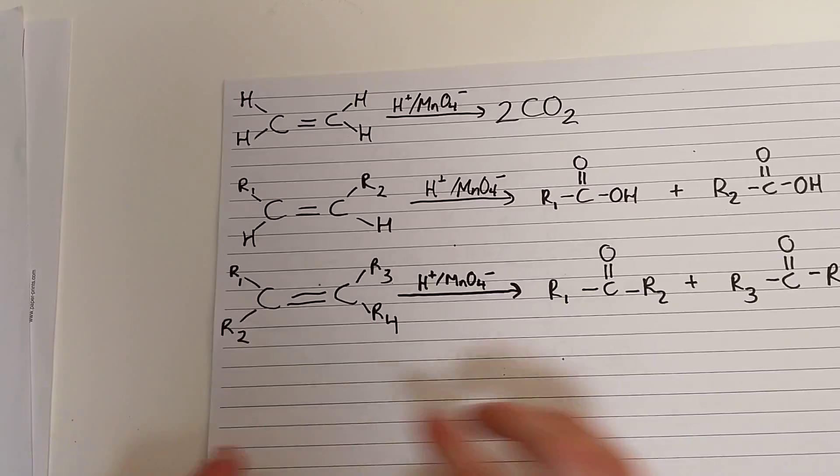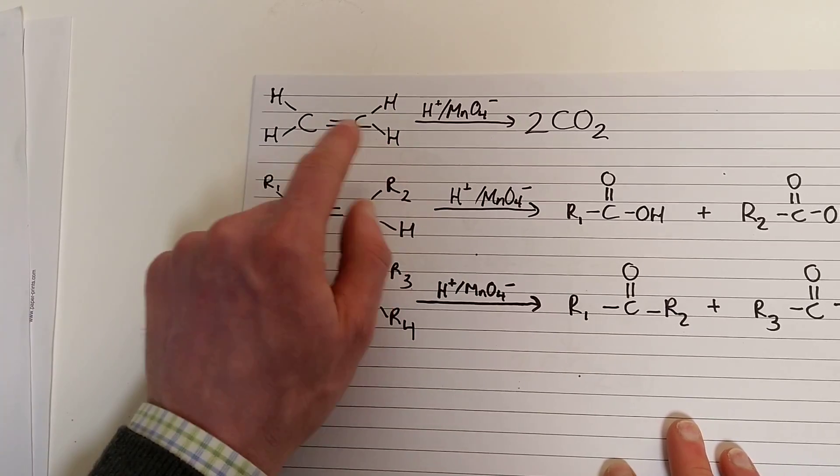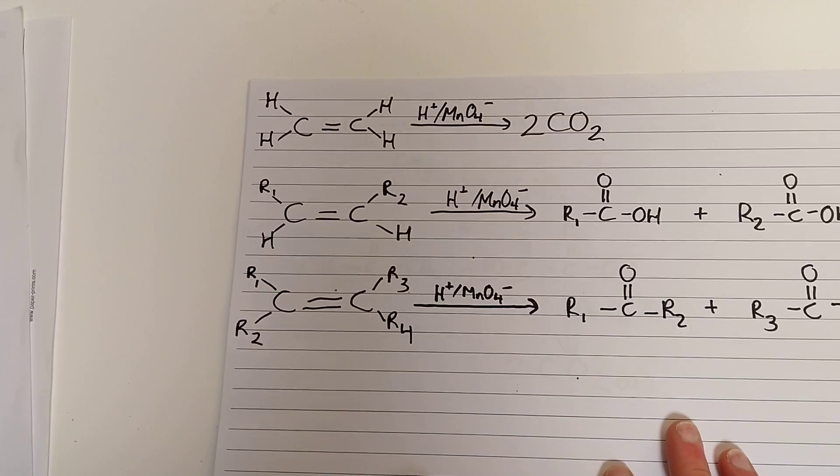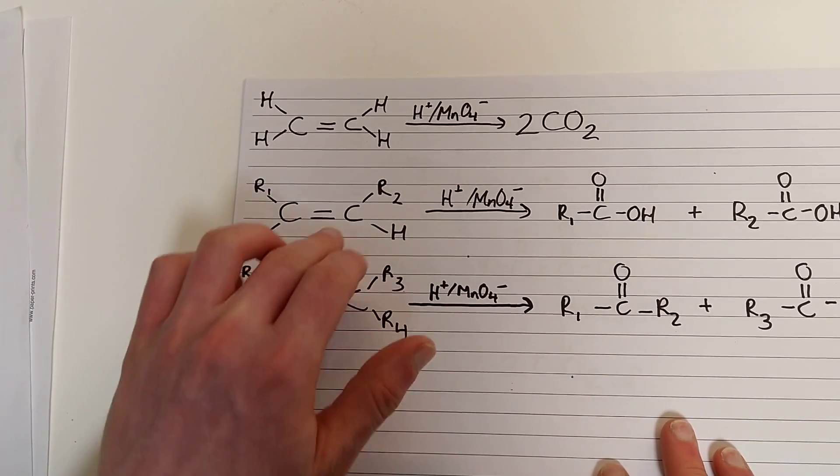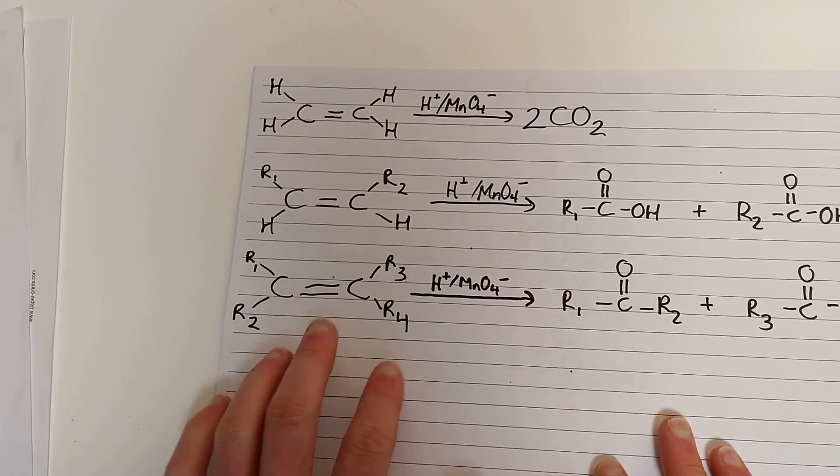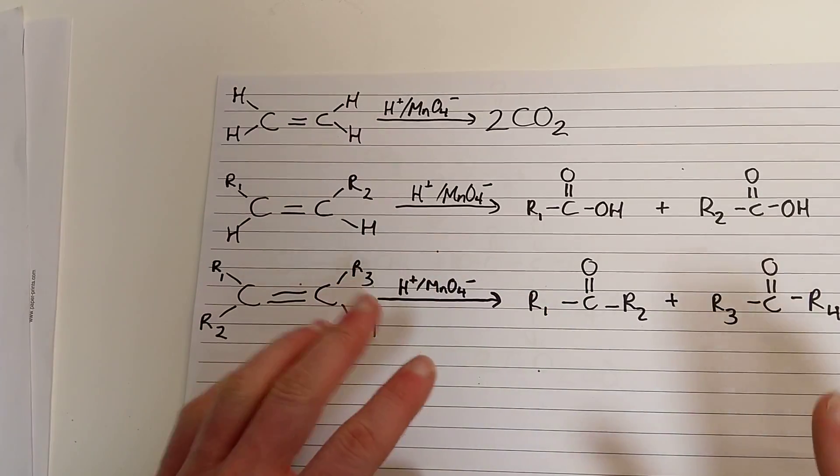So, to summarize those rules, I've drawn them out. We've got an alkene here. Both carbons have two hydrogens. So when I break the bond, we're forming two equivalents of CO2. Here, we have a double bond, both carbons having one hydrogen. So when that double bond breaks, we're forming two equivalents of carboxylic acids. And when this double bond breaks, no hydrogens are present. We're forming two equivalents of ketones. Okay, those are the rules.